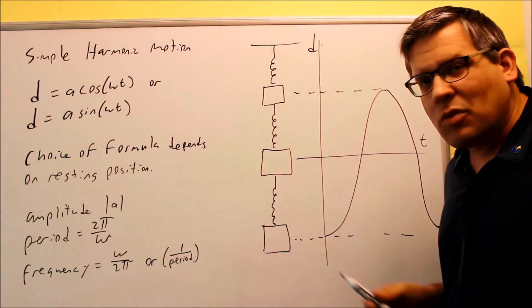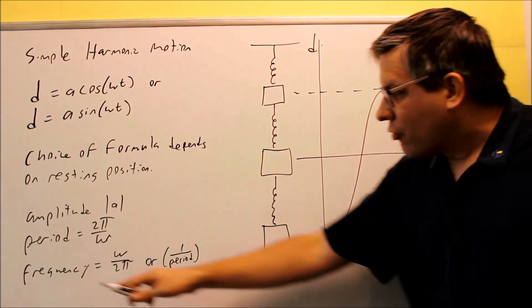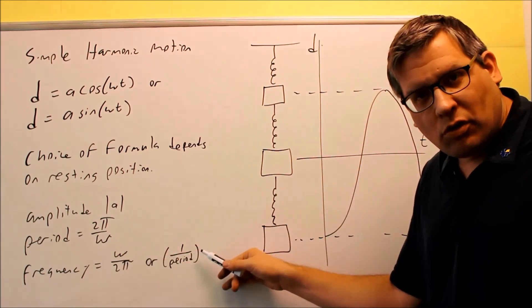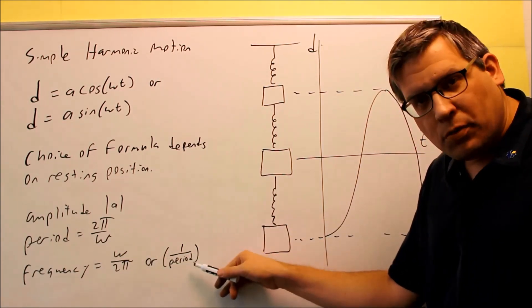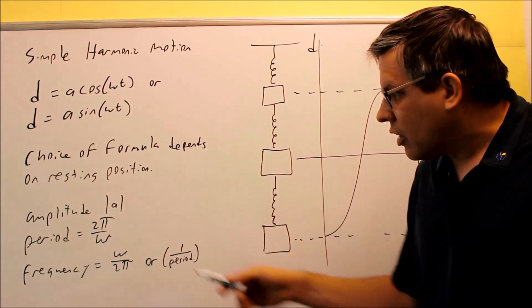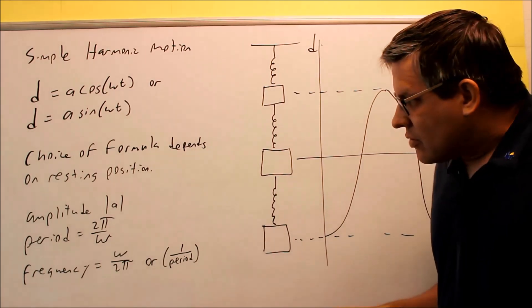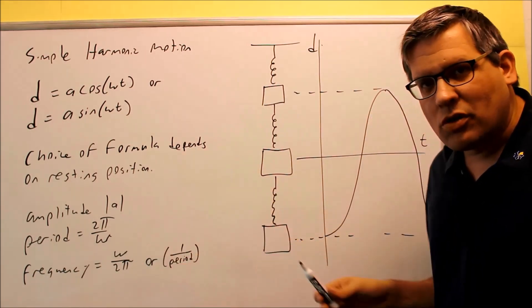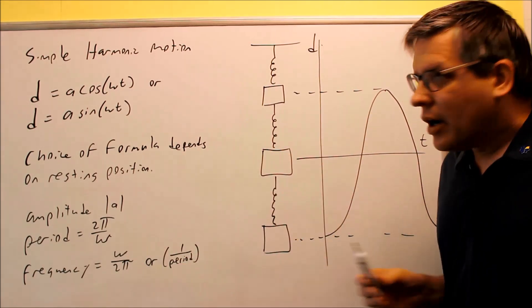Now a new formula in this section is it may ask you for frequency. The frequency is always the reciprocal of your period. It's 1 over the period. Or again, if you have a formula here, 2π over omega, we can write it as omega over 2π.